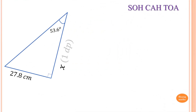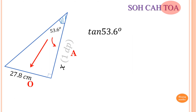Next, find the value of X correct to one decimal place. 53.6 degrees is given, and the opposite of the angle is also given, so we label it O. X is adjacent to the angle, so we label it A. We have O and A, so we use TOA — tan of 53.6 degrees is equal to opposite over adjacent, which is 27.8 over X.